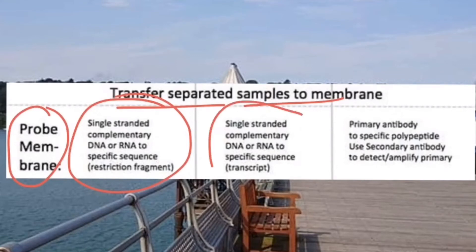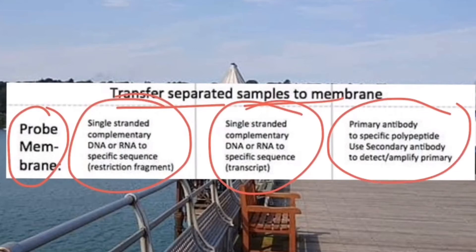For RNA, similar to DNA, it is single-stranded, but you do not need restriction digestion — you run it directly. For Western blotting in the case of proteins, a primary and secondary antibody-based method is used to identify the specific protein according to the antibodies in Western blotting techniques.